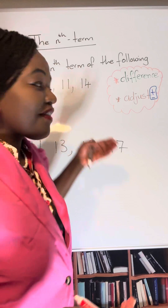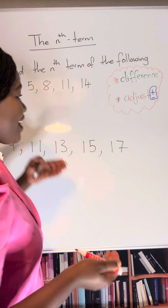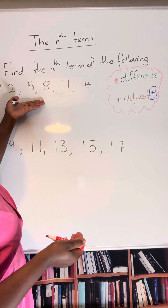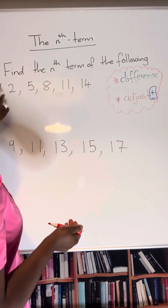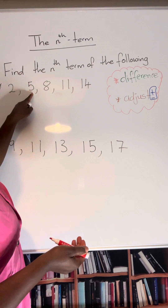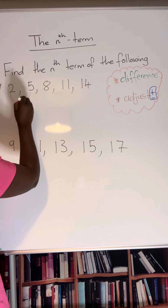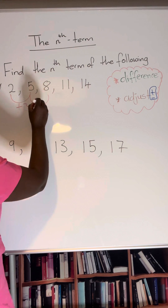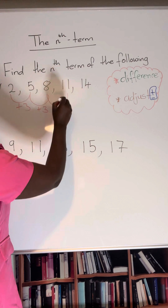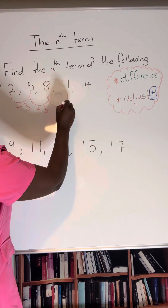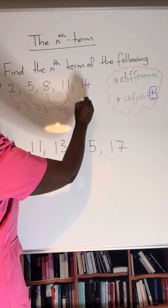I've got these examples here. To find the nth term of this sequence you need to find the difference. From 2 to get to 5 you're adding 3. From 5 to get to 8 you're adding 3. From 8 to get to 11 you're adding 3. From 11 to get to 14 you're adding 3.